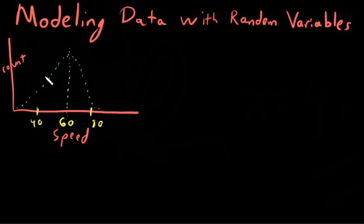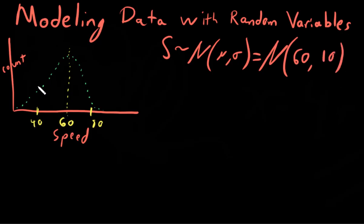And so what you could say is that you're going to model the data that you collected with the radar gun as a random variable S that follows, this little squiggly line represents the term follows, a normal distribution with mean mu and sigma that is equal to, and now we'll actually put those variables in, a mu of 60, mean of 60, and a standard deviation of 10. These points represented two standard deviations out.